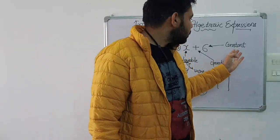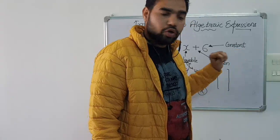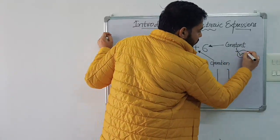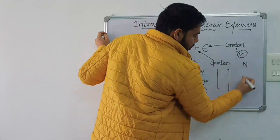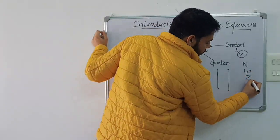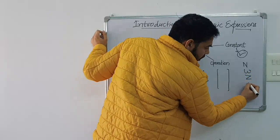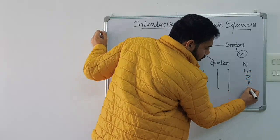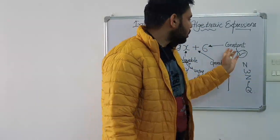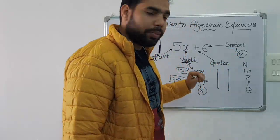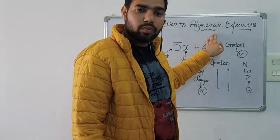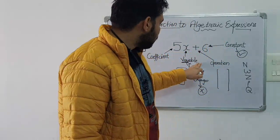Now, what is a constant? A constant is simply a number or numeral whose value is fixed — whether it is a natural number, a whole number, an integer, or a rational number. All of them can be used as a constant.